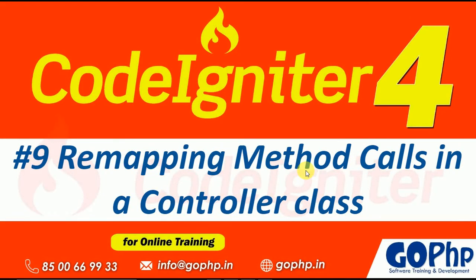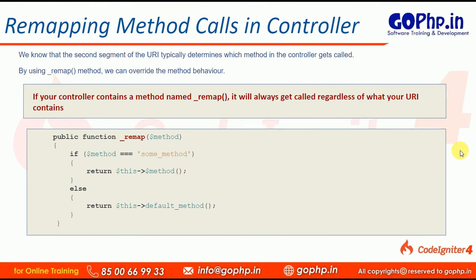Hello everyone, welcome back to our coding editor tutorials. In this session we are going to discuss about remapping method calls in a controller class. What is meant by remapping method calls? We know that in a URL, the second segment of the URI is always going to be the name of the method to be called in a controller class. If the method does not exist in your controller class, it is going to display a 404 file not found error.